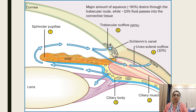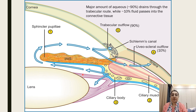This figure shows the formation of aqueous humor from the ciliary process. The ciliary process consists of the ciliary muscle as well as ciliary body. Aqueous humor is released from the ciliary body, and 90% of it drains through the trabecular meshwork. If the trabecular meshwork is blocked, drainage of aqueous humor will be hampered and intraocular tension can rise.